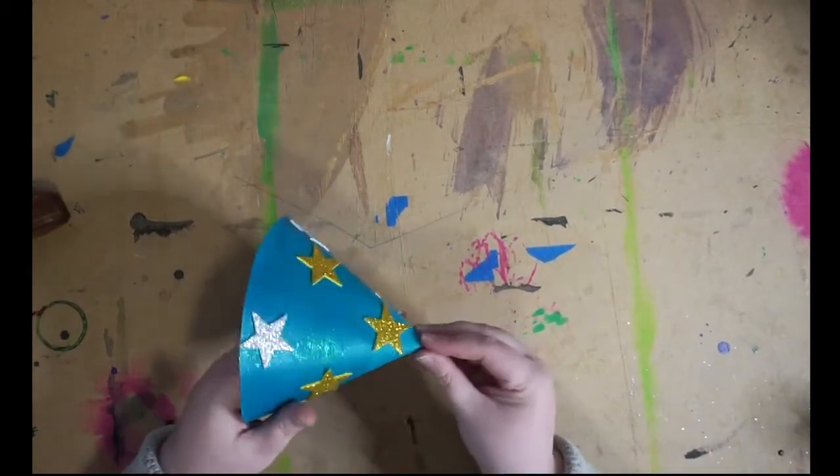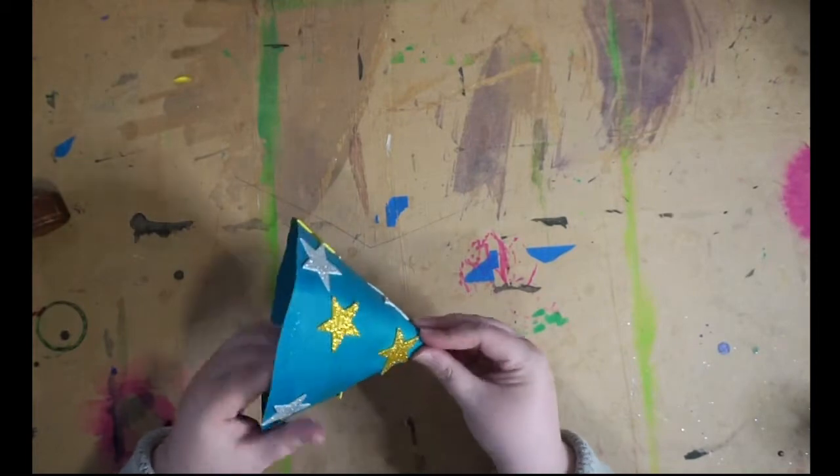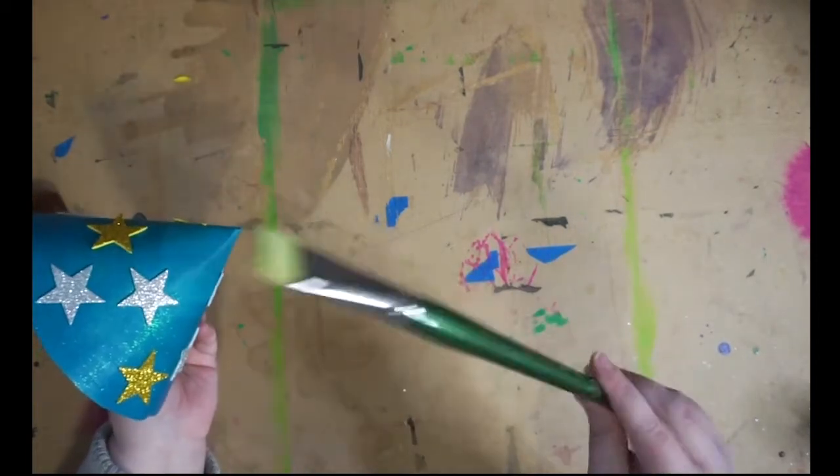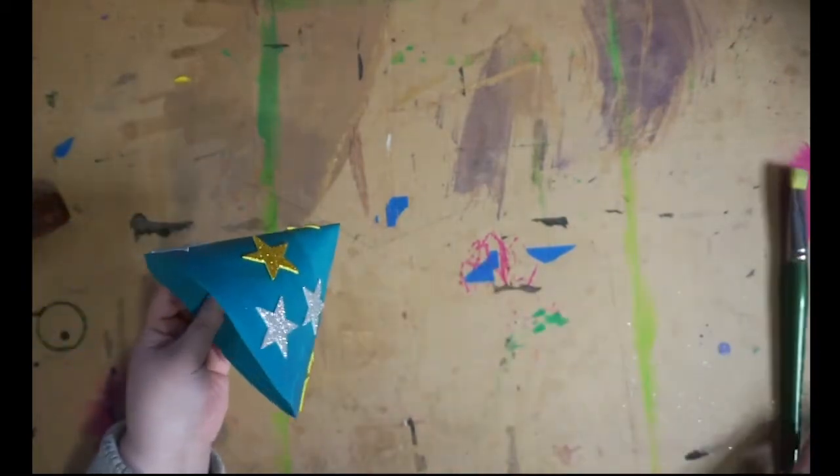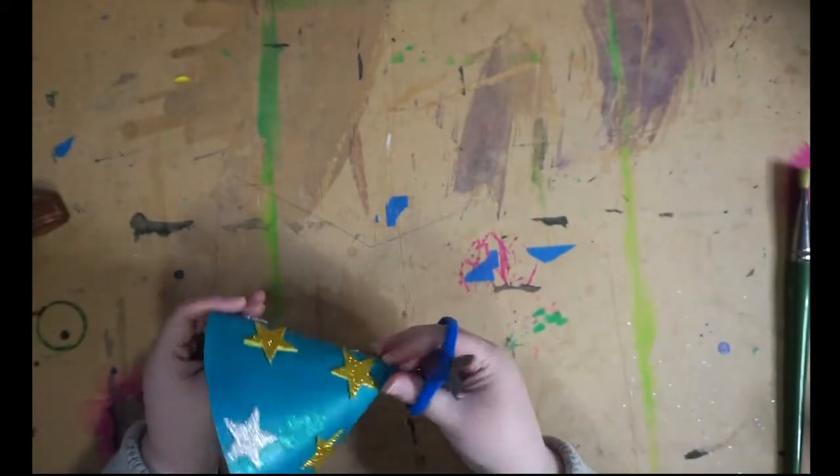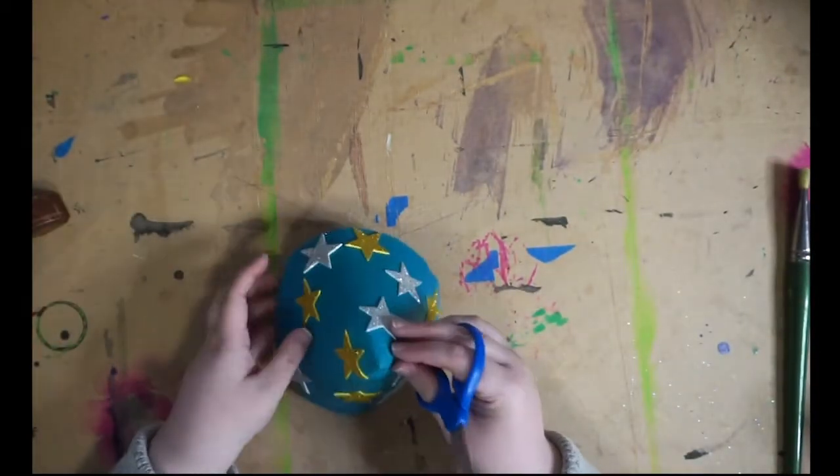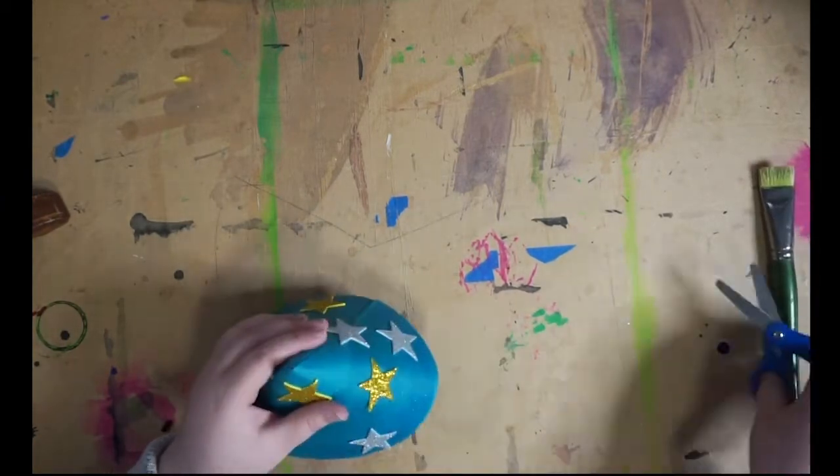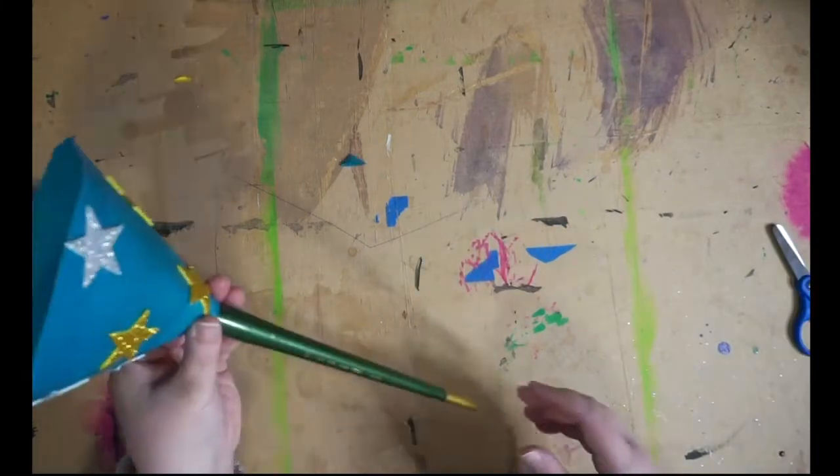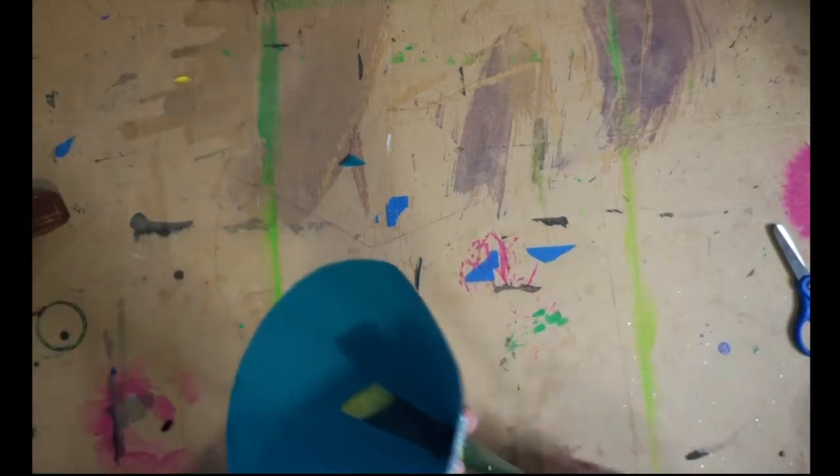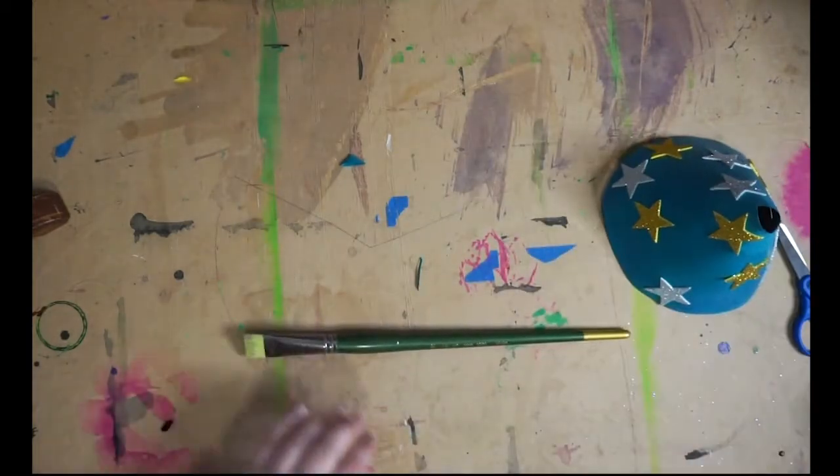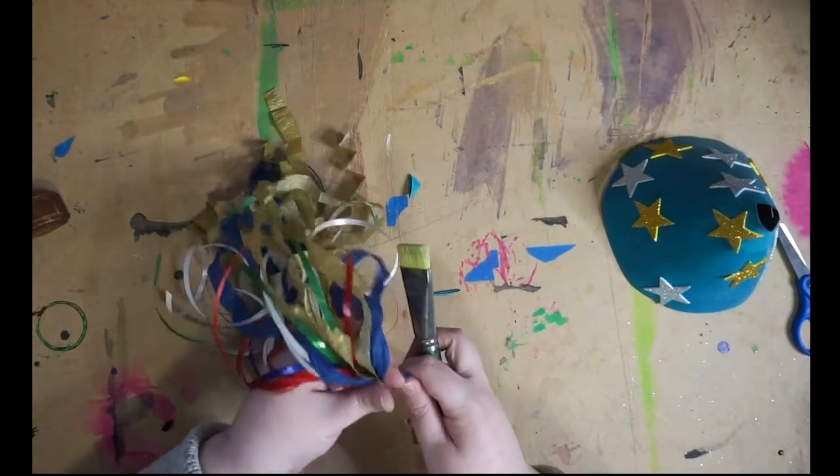Now we need a space in this cone to put the wand part through, so this part, your paint brush or whatever you're using. So we're going to cut a little bit off the top part. So that's what your wand is going to look like but we're not finished because we need the firework part.